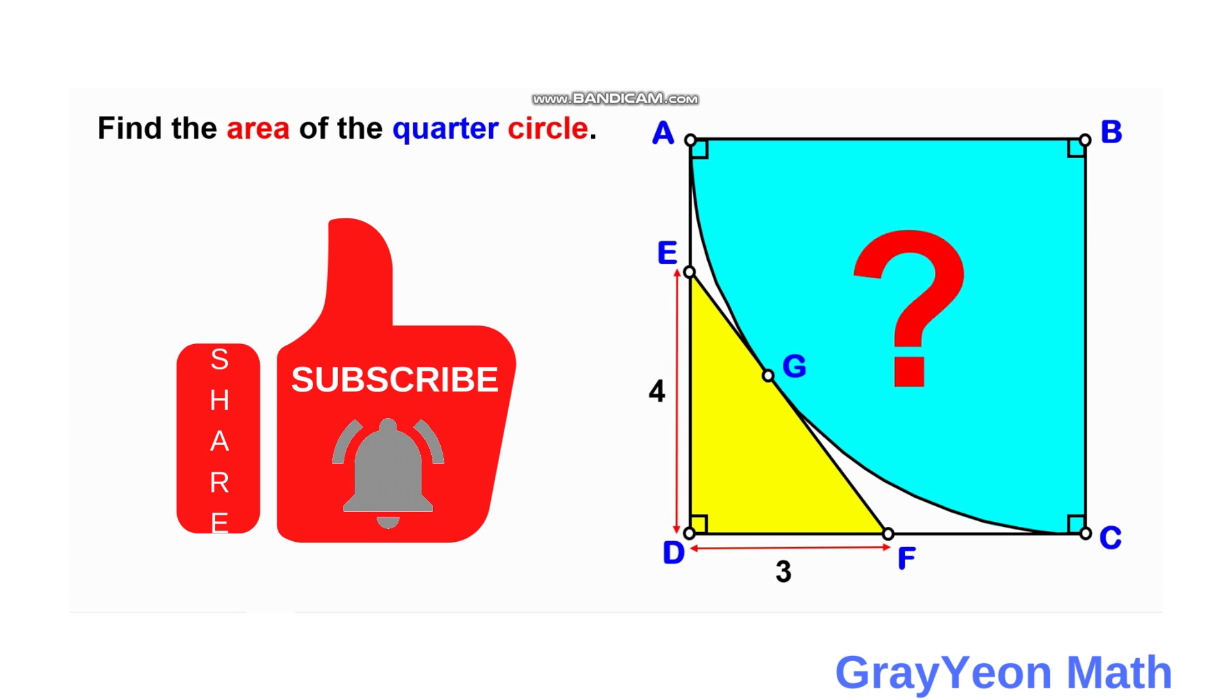This right triangle and quarter circle are actually mutually tangent at point G inside the square. The length of the black ED for the yellow right triangle is 4 units and DF is 3 units. We are required to find the area of this quarter circle.